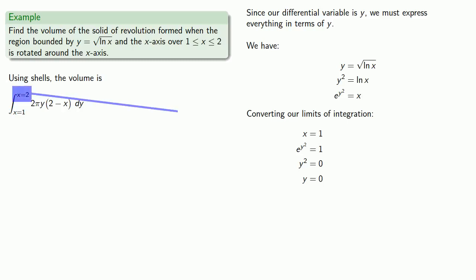When x = 2, y = √(ln 2), where we use the positive square root because we graphed the region.